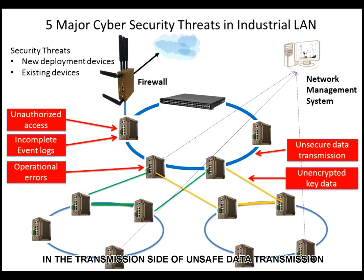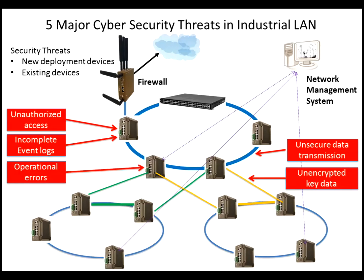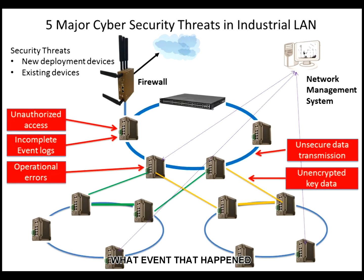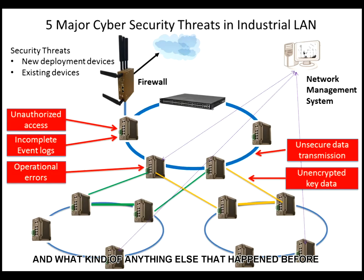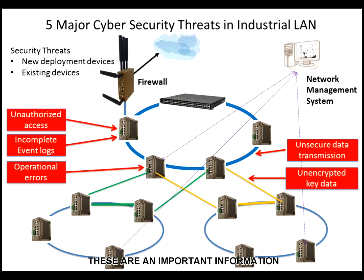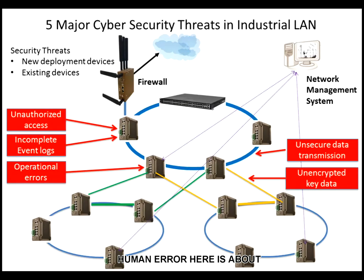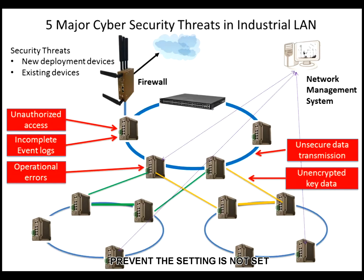On the transmission side, unsaved data transmission is a threat — sometimes important information is not encrypted. The next threat is incomplete event logging: in the network, what events occurred, what kind of user logged in, when they logged in, and what else happened — these are all important pieces of information for network security. Additionally, human error — not taking proper precautions or misconfiguring settings — leads to cybersecurity vulnerabilities.